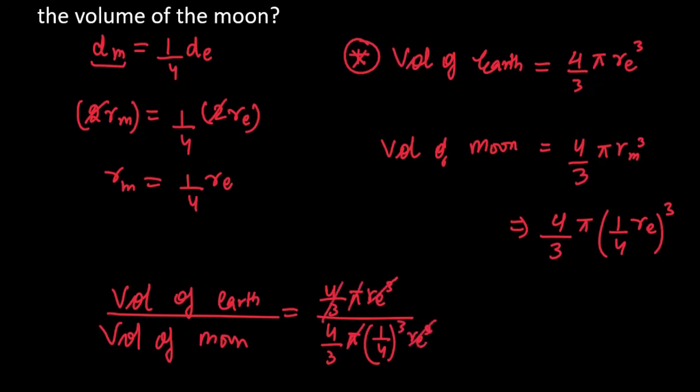RE cube, RE cube cancel, pi and pi cancel, 4 by 3, 4 by 3 cancel. You're left with 1. 1 by 4 cube, take that out, you get 16 times 4 which is 64.